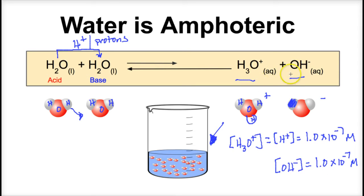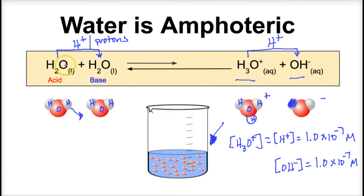Why do we have such a small amount of these ions floating around in water, when the reaction clearly shows the formation of hydronium and hydroxide ions? What also happens is that the hydronium donates an H+ to the hydroxide, producing water. So there is a reverse reaction also taking place, and in fact the reverse reaction happens more frequently than the forward reaction. That is why when we drink a glass of water, we are mostly drinking water and consuming very small quantities of hydrogen ions and hydroxide ions.